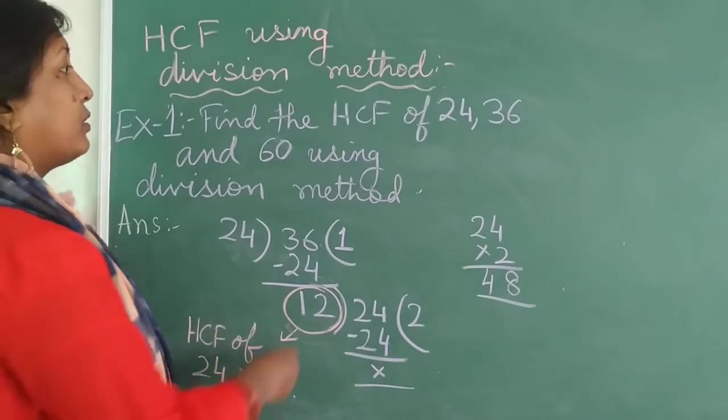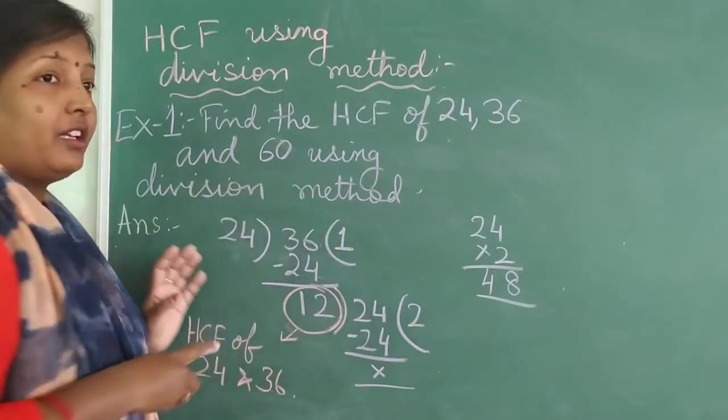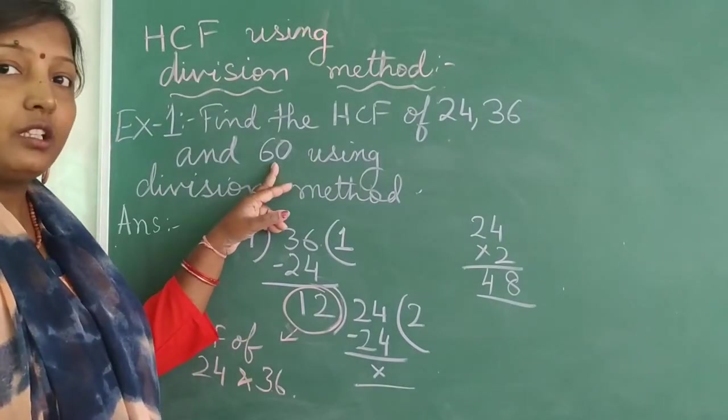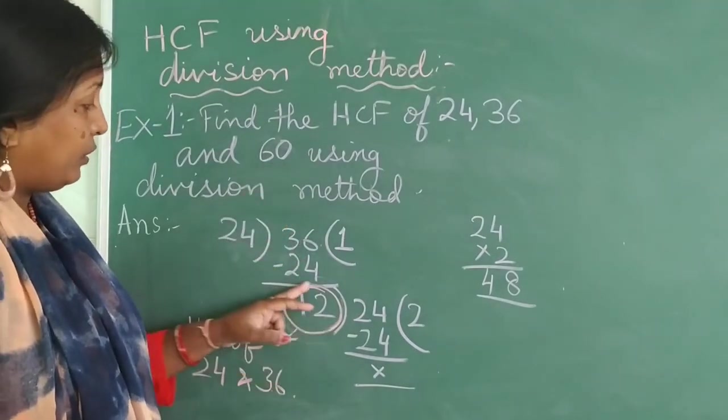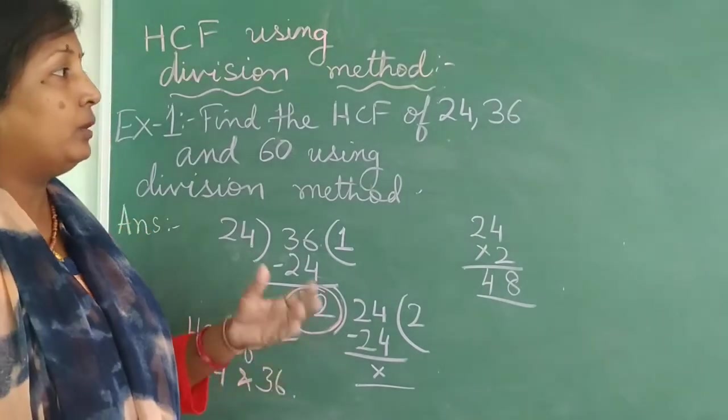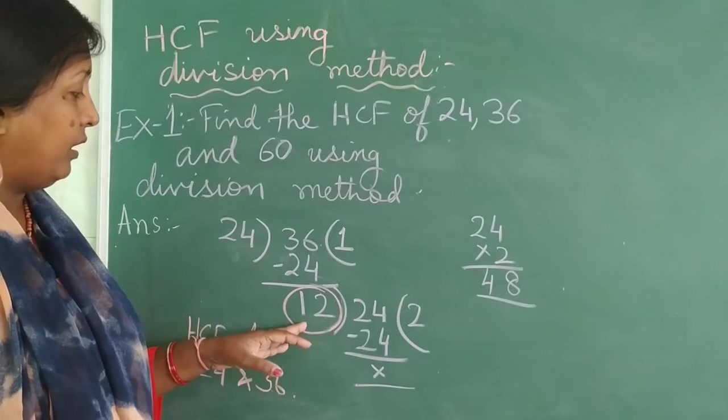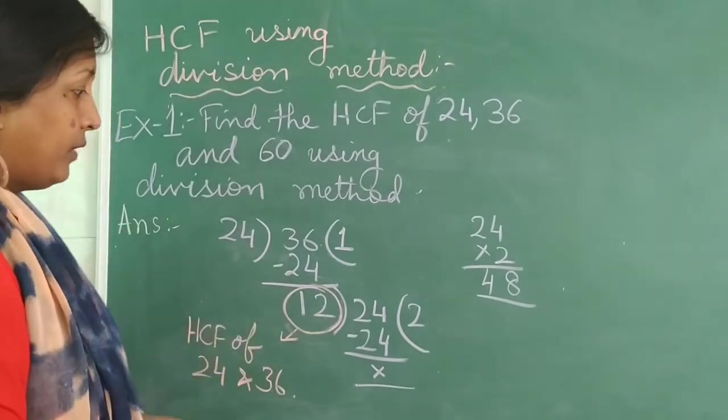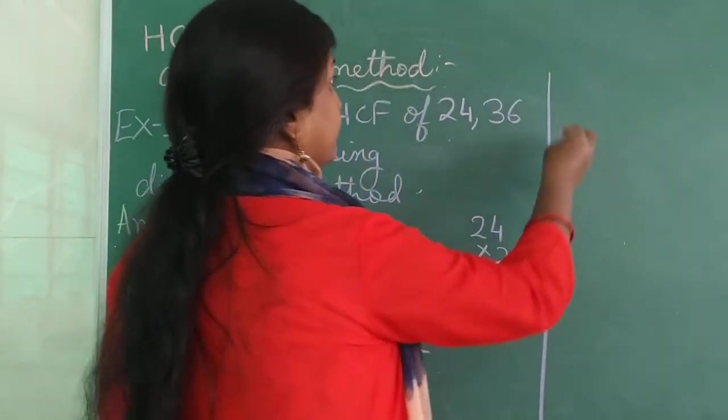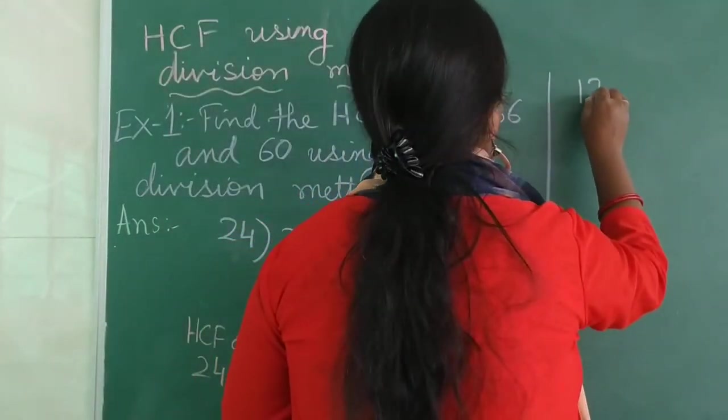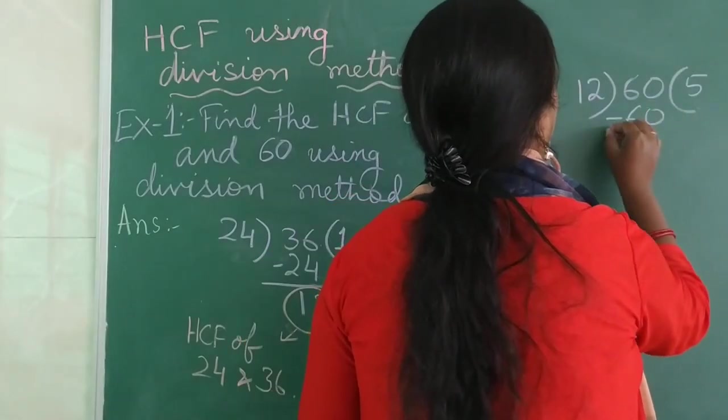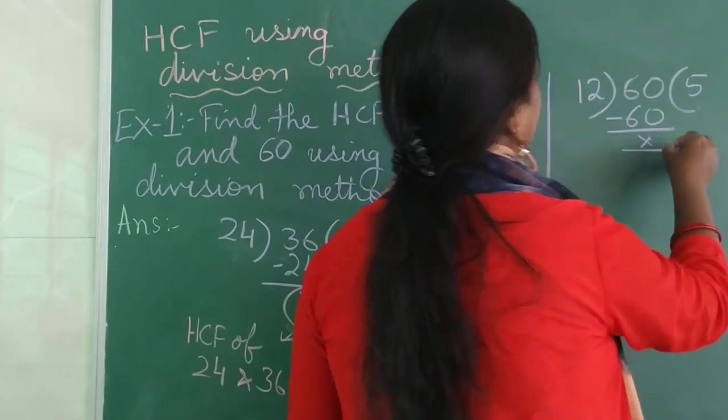But we are supposed to find out the HCF of 24, 36 and 60. So what we will do is, divide the next number, 60, using the HCF of the two numbers, 24 and 36. So we will do next is, divide 12 by 60. Now let us do it here.